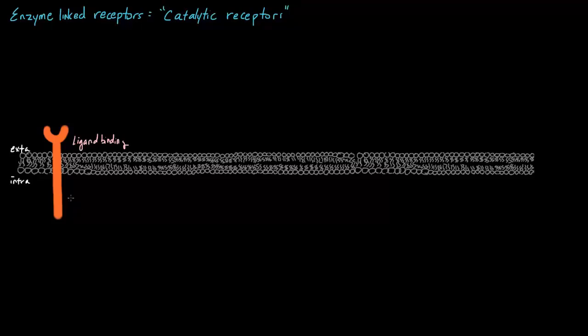The enzymatic domain is our functional domain — this is the part of the enzyme-linked receptor that can act as an enzyme. So when a ligand binds on the extracellular side, it causes the intracellular side to act as an enzyme.